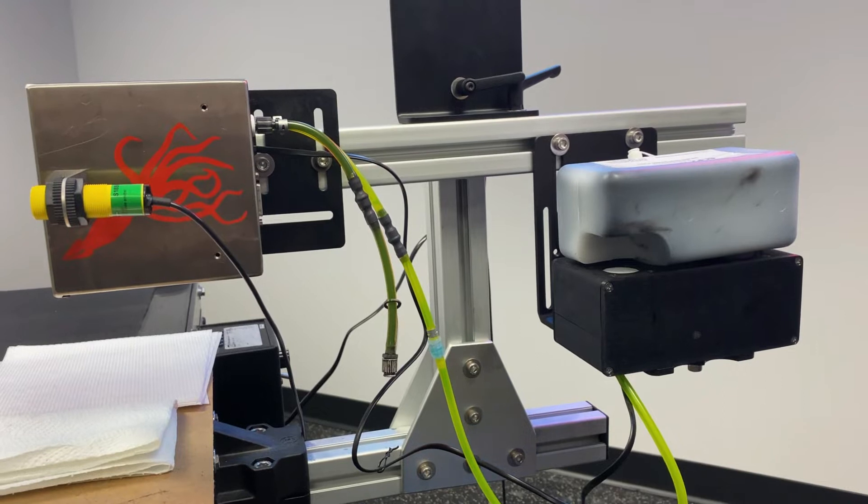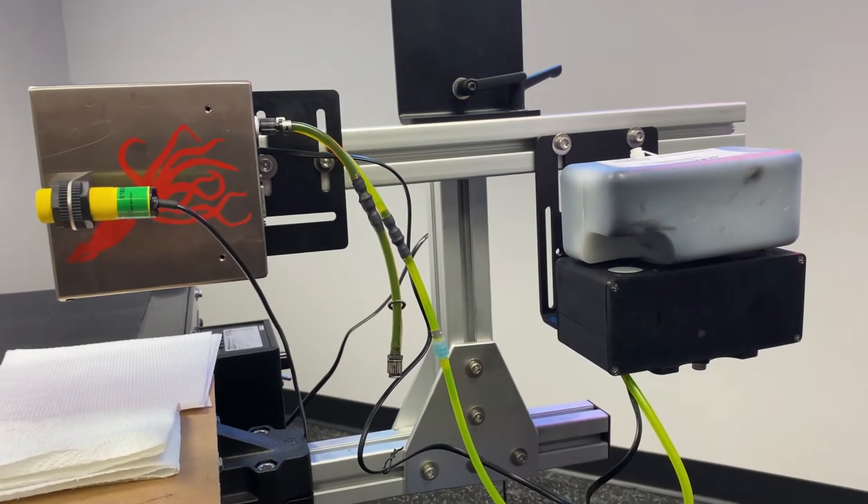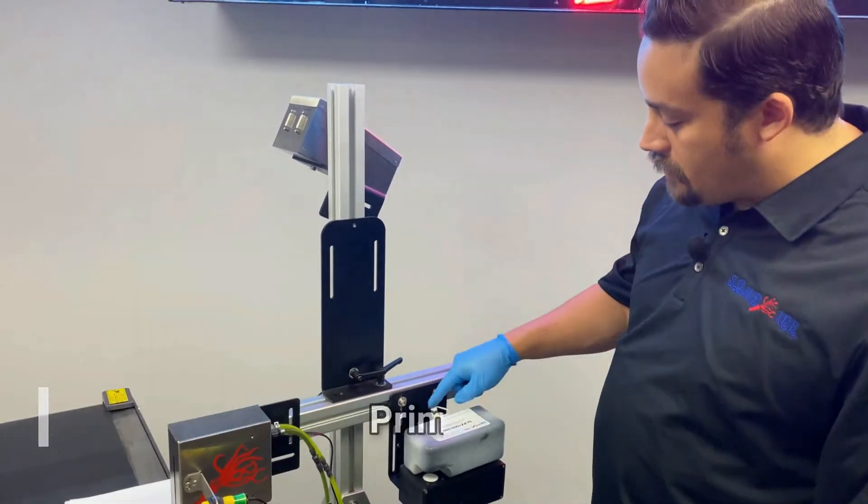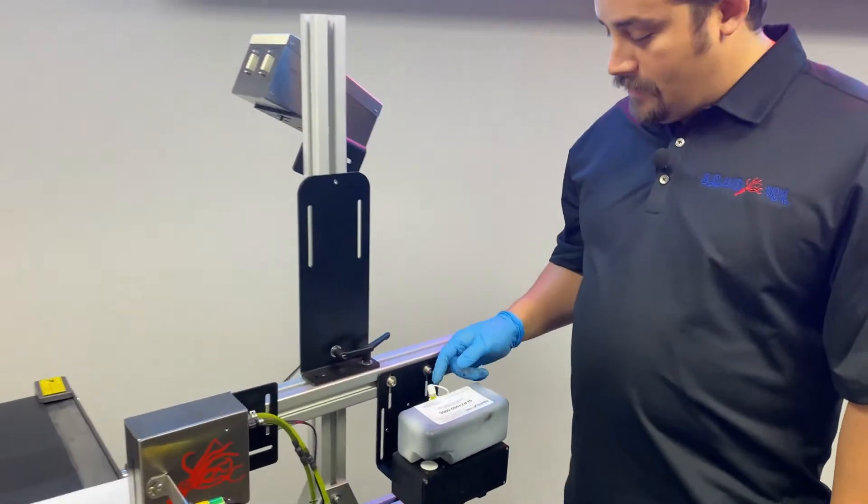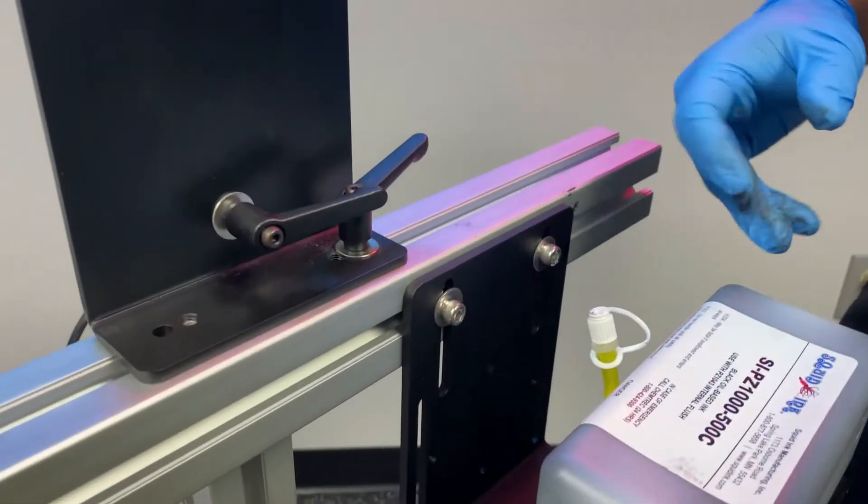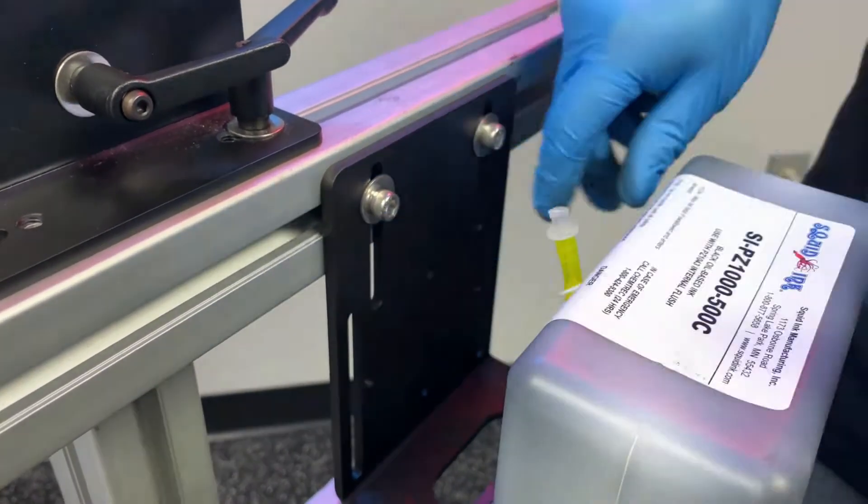Once you have that leveled, then we can prime the printhead with ink. To begin priming the printhead, the first thing we're going to do is open up our vent cap. The vent cap on our passive systems needs to be open while the system is running and printing, so just leave it open for the duration of the system's runtime.